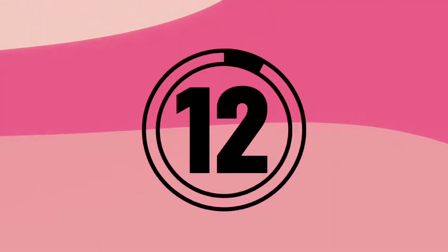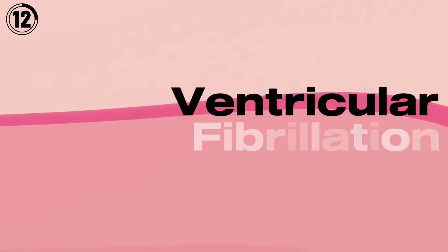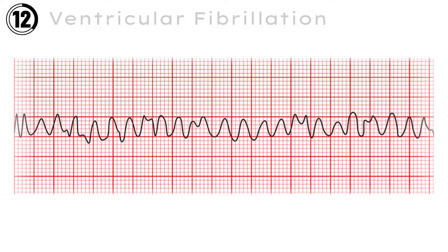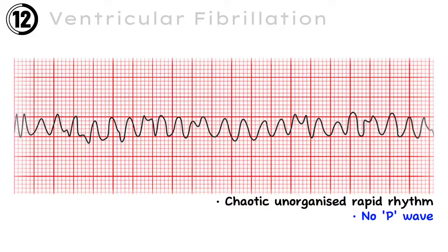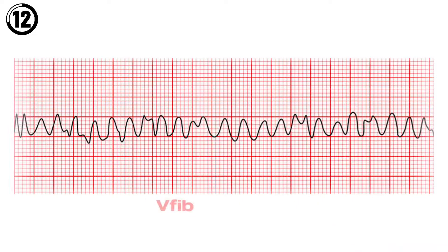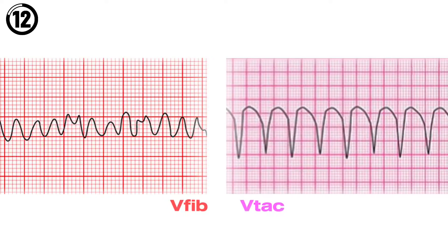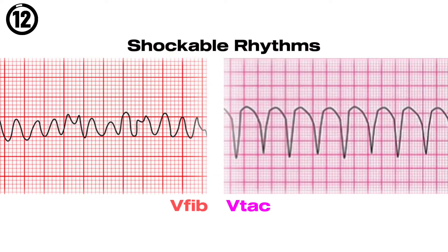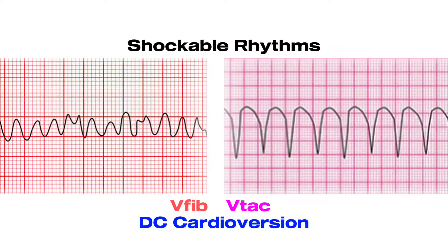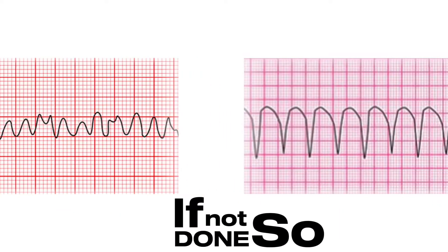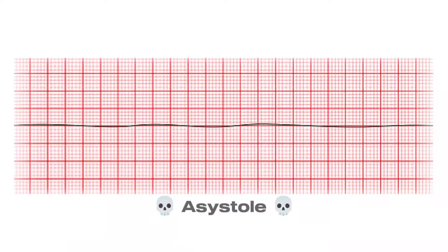ECG number 12 — one of the most lethal ECG abnormalities: Ventricular Fibrillation, or VFib. Ventricular fibrillation is a chaotic, unorganized, rapid rhythm — there is no P wave, QRS complex, or T wave present. Ventricular fibrillation and ventricular tachycardia are both shockable rhythms and need DC cardioversion. If not done, it will lead to cardiac arrest followed by asystole — a flat-line ECG suggestive of no cardiac activity — meaning the end of life.